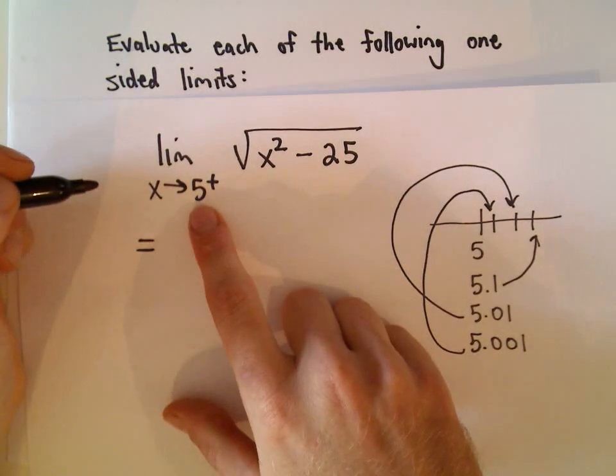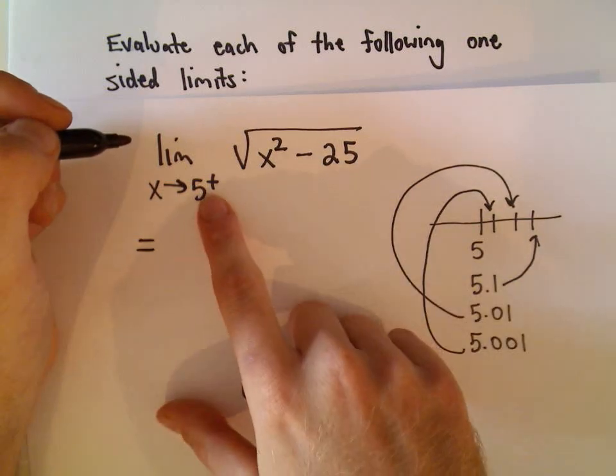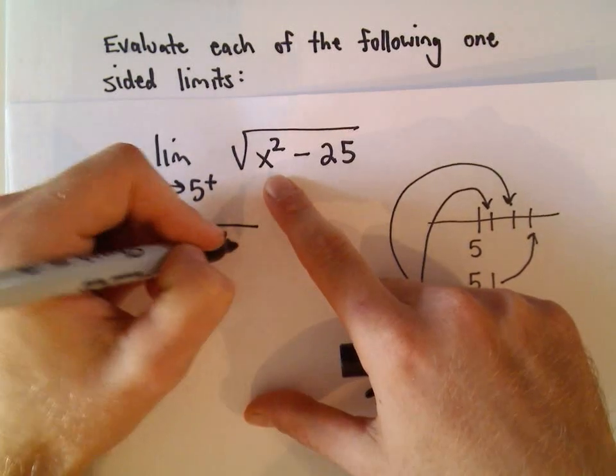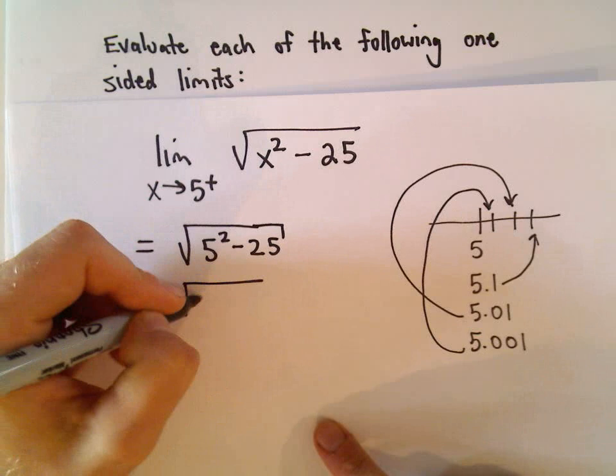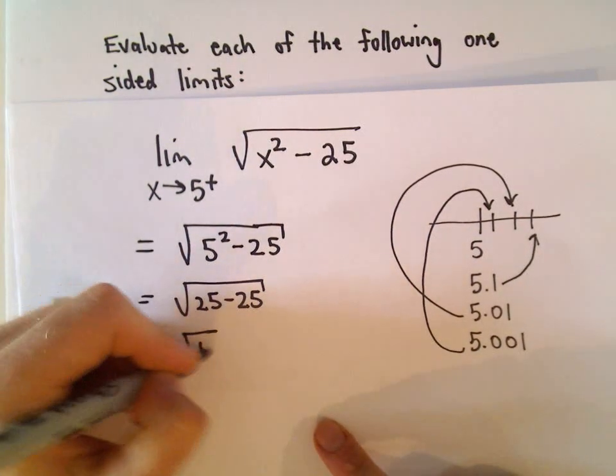So basically the moral of the story here is this function would be defined for numbers a little bit bigger than 5 and we can just plug it in. We would get 5 squared minus 25, which would be the square root of 25 minus 25 which would be the square root of 0.